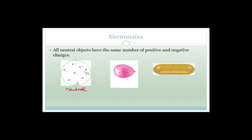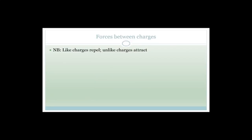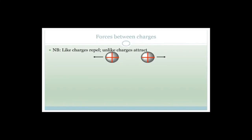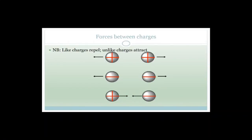If something is positively charged it has lost electrons; if negatively charged it has gained electrons. Now let's talk about forces between charges: like charges repel and unlike charges attract. So two positively charged objects repel, two negatively charged objects repel, but a positively charged object and a negatively charged object will attract one another — opposites attract.